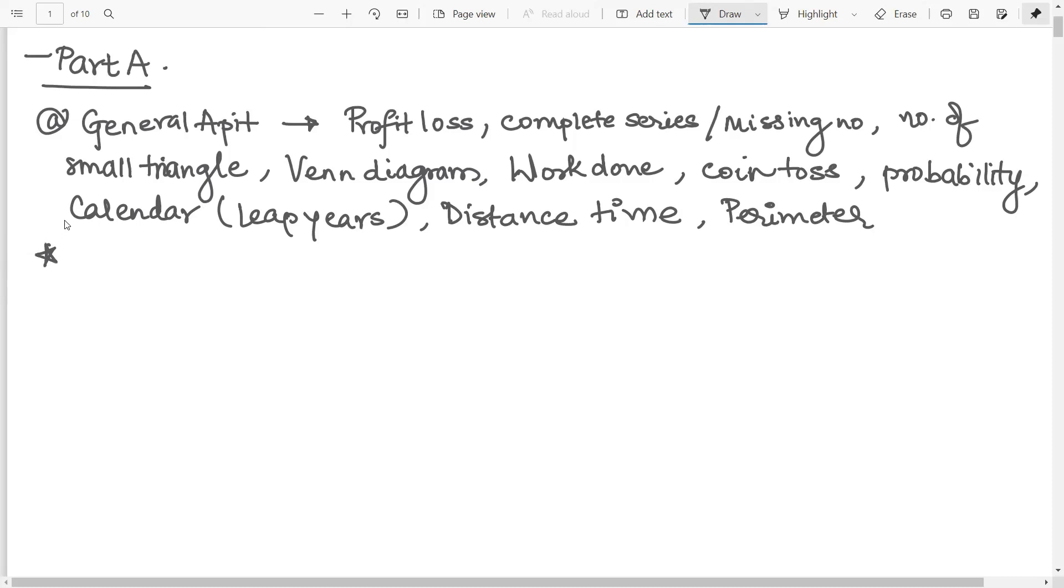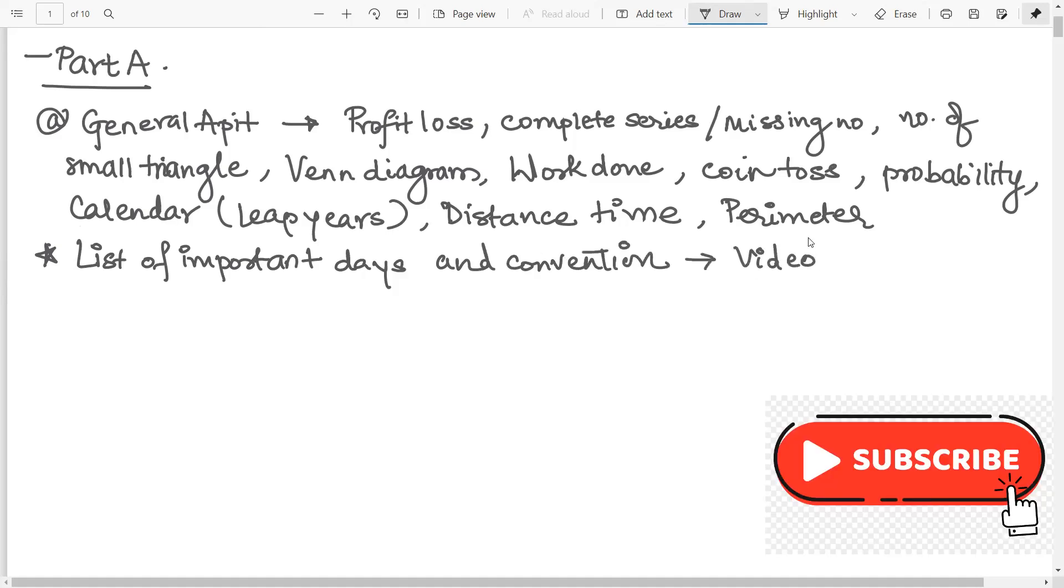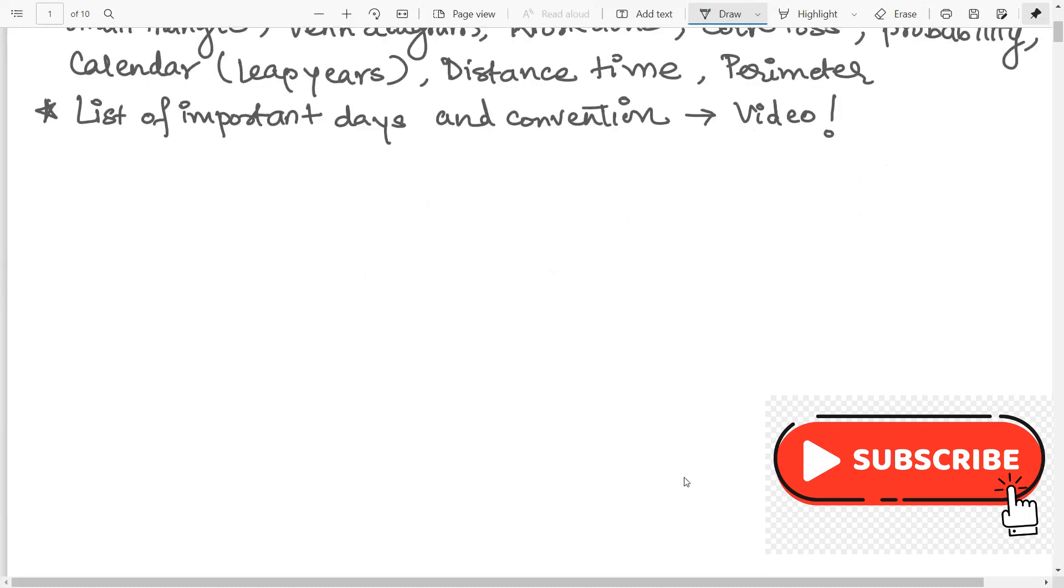Now this particular topic doesn't actually fall under general aptitude but I am putting it here so that you remember. And that is on the list of important days and conventions. All important days and conventions, treaties that were signed are asked in biotech paper. So a video on this I have already uploaded during my ICMR series. So I will link this video right over here. Please go through this video. Now the other type of things that are asked in party. So for the second type, we go on to general biotechnology.